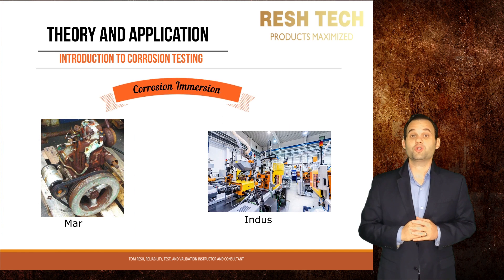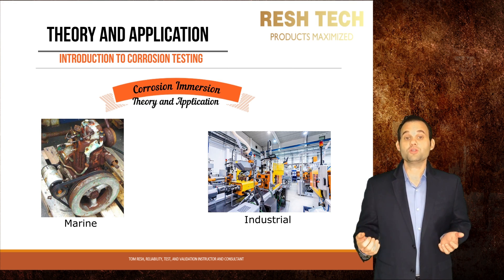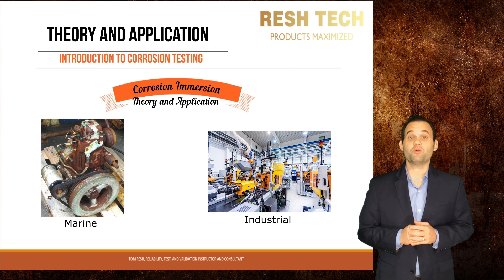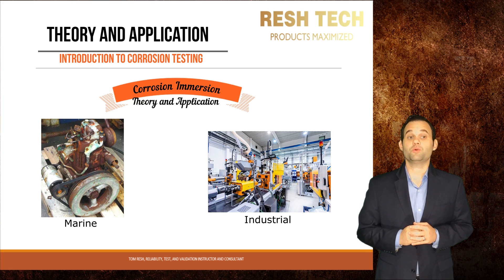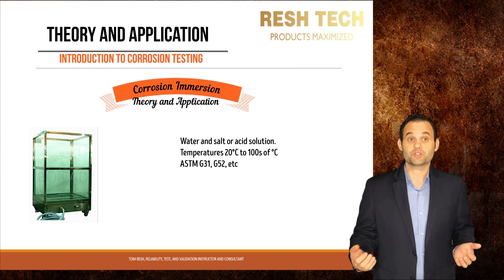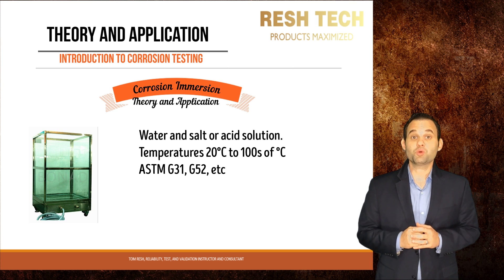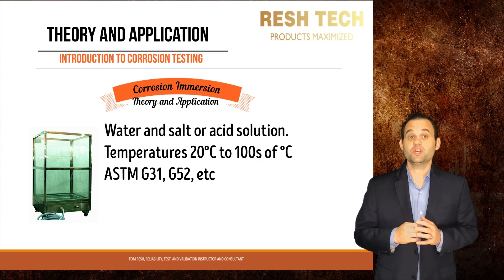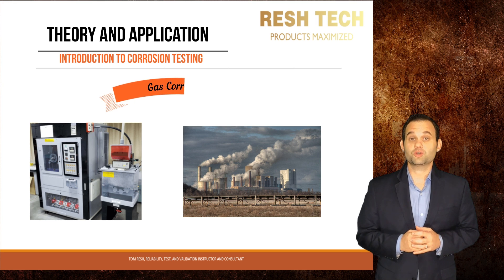Corrosion immersion testing is used to simulate corrosive environments such as marine environments where components sit under salt water for long periods of time, or industrial environments where corrosive liquids are used for industrial processes. Testing can be performed using either salt water or an acid solution depending on your application. Test temperatures can be from 20 degrees Celsius all the way up to hundreds of degrees Celsius. Test standards used include the ASTM standards as listed.